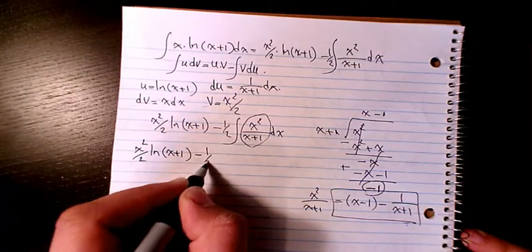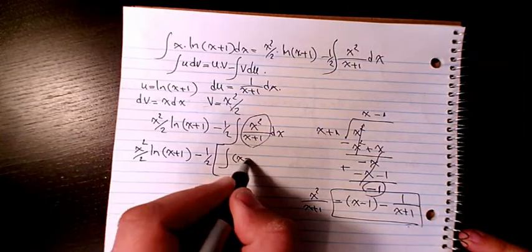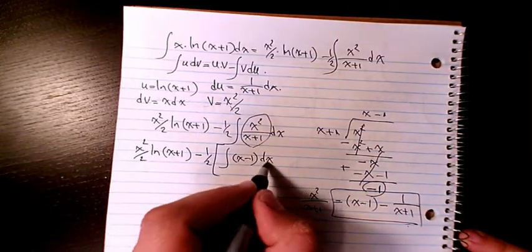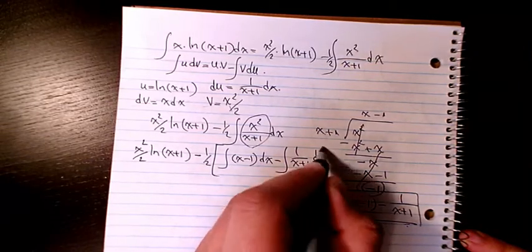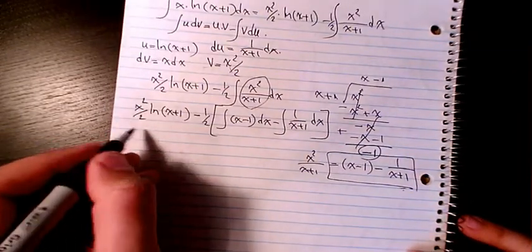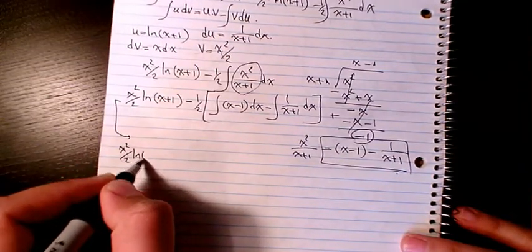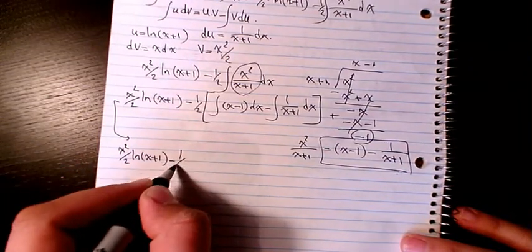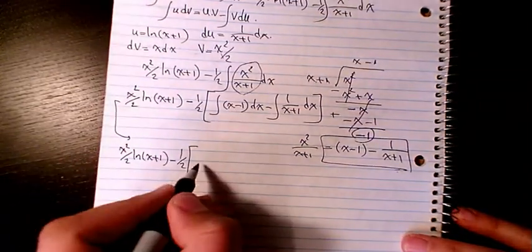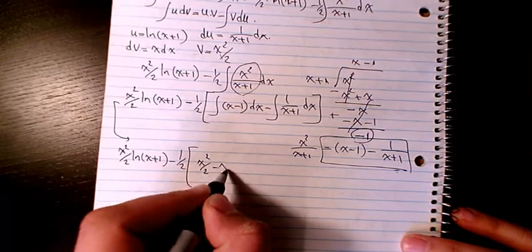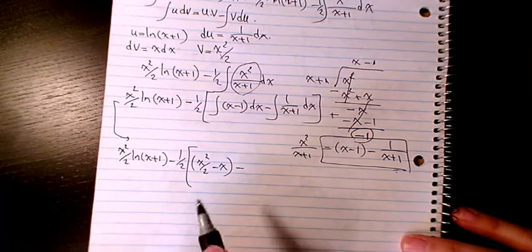Then I will have x squared over 2 times ln(x+1), minus 1/2 times the integral of (x minus 1) dx, which gives x squared over 2 minus x, minus the integral of 1 over (x+1), which is ln(x+1).